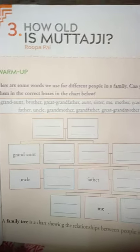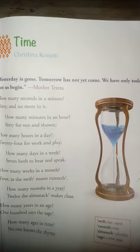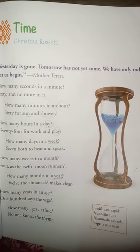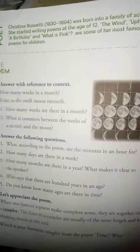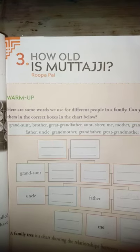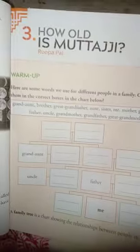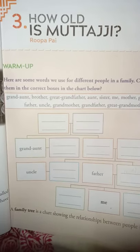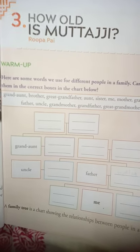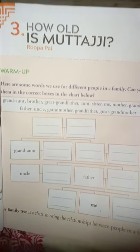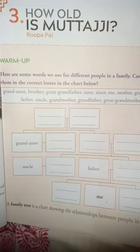Now, before that, you know what was our last chapter? It was, I think, a poem by Christina Rossetti. The explanation was given to you. Only the question answers are remaining, but before giving the question answers to you, I am going to explain the next story. This prose is chapter number 3, 'How Old Is Mutaji' by Rupa Pai.